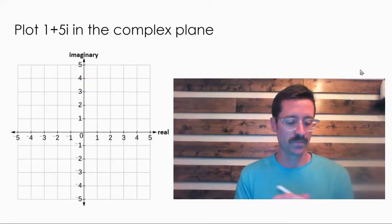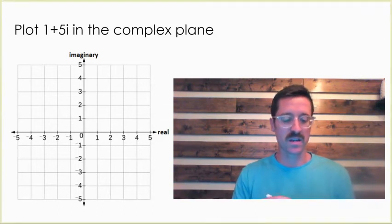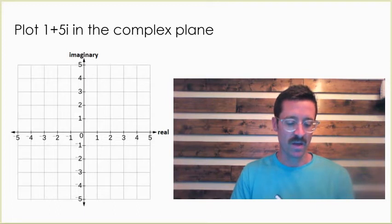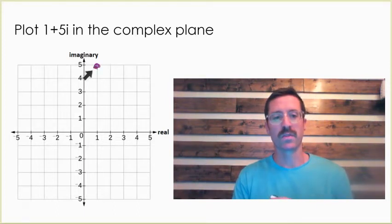Now, why don't you try one? Here's our next example. Hopefully you're saying, okay, this is really easy. My real value is a one, so I'm going to move to the right one because it's a positive one. And my imaginary value, that b value, is a five, so I'm going to move up five. And to represent this value on the complex plane, you would put a point right there.